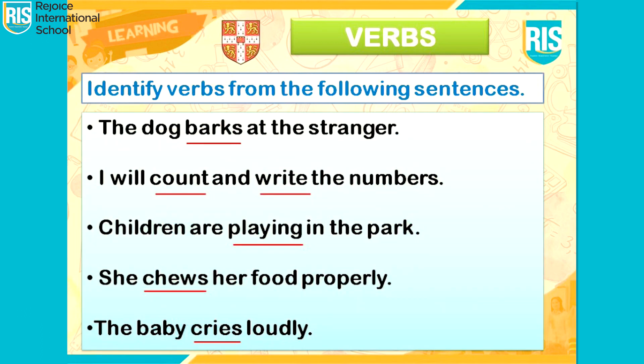So students, let's identify the verbs from the following sentences. First sentence: the dog barks at the stranger. What is the action here? Barks. So 'barks' is a verb. Second sentence: I will count and write the numbers. 'Count' and 'write' are action words. Hence, they are verbs.